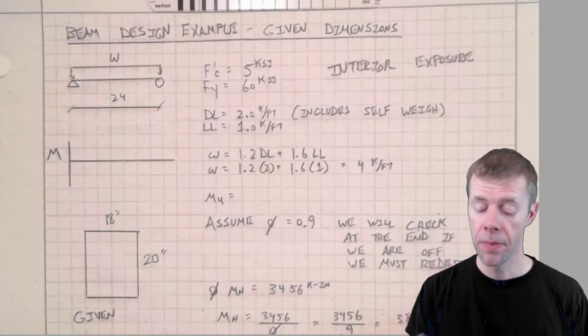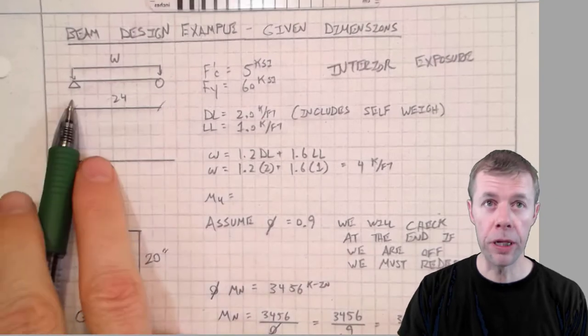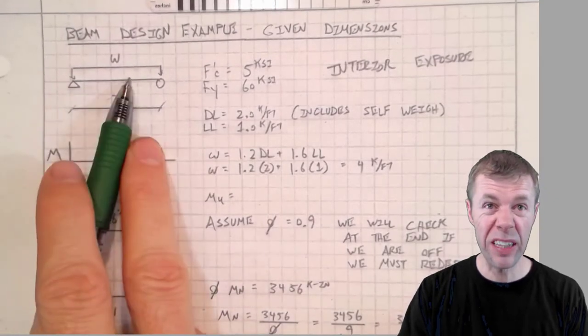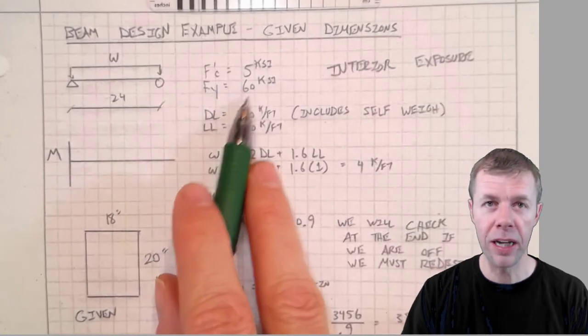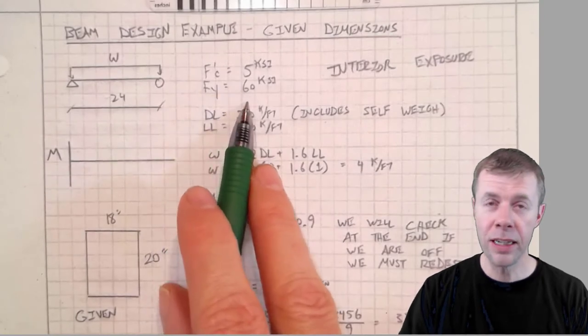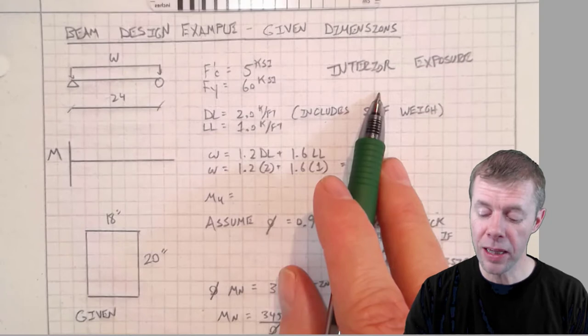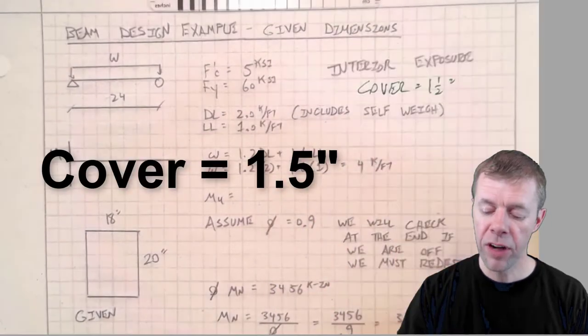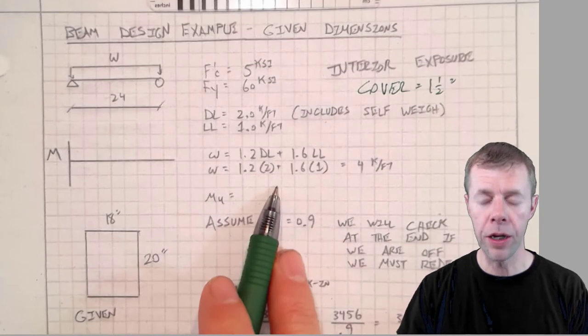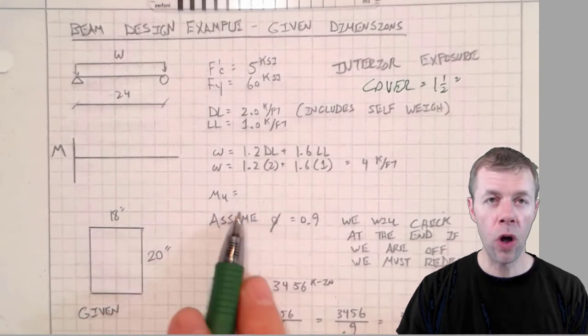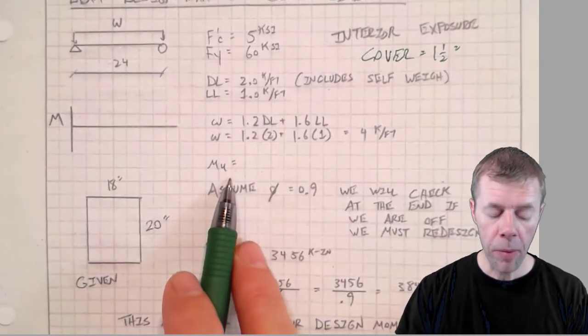In this problem we're designing a beam that's simply supported with a constant distributed load. It's got a compressive strength of 5,000 psi, 60 ksi, interior exposure. That means I've got my dead load, live load, and I've factored my dead and live load right here.